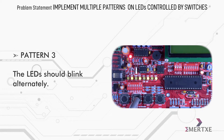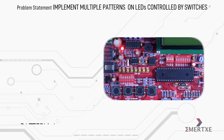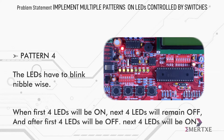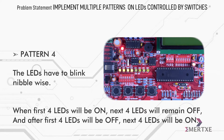In pattern 3, the LEDs should blink alternately. In pattern 4, the LEDs have to blink nibble-wise — that is, when the first 4 LEDs are on, the next 4 LEDs will remain off, and after the first 4 LEDs turn off, the next 4 LEDs will turn on.